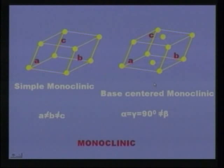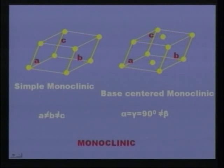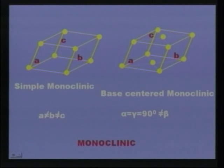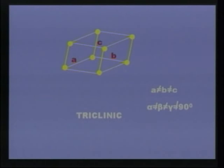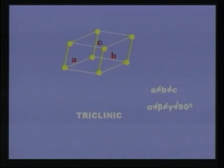The monoclinic lattice has two types: simple monoclinic and base centered monoclinic. In this lattice, A ≠ B, B ≠ C, and C ≠ A. The angle alpha = gamma = 90 degrees, but beta is not equal to 90 degrees. In the triclinic lattice, atoms are arranged only at the corners, with A ≠ B, B ≠ C, and all angles alpha ≠ beta, beta ≠ gamma, and gamma ≠ 90 degrees.